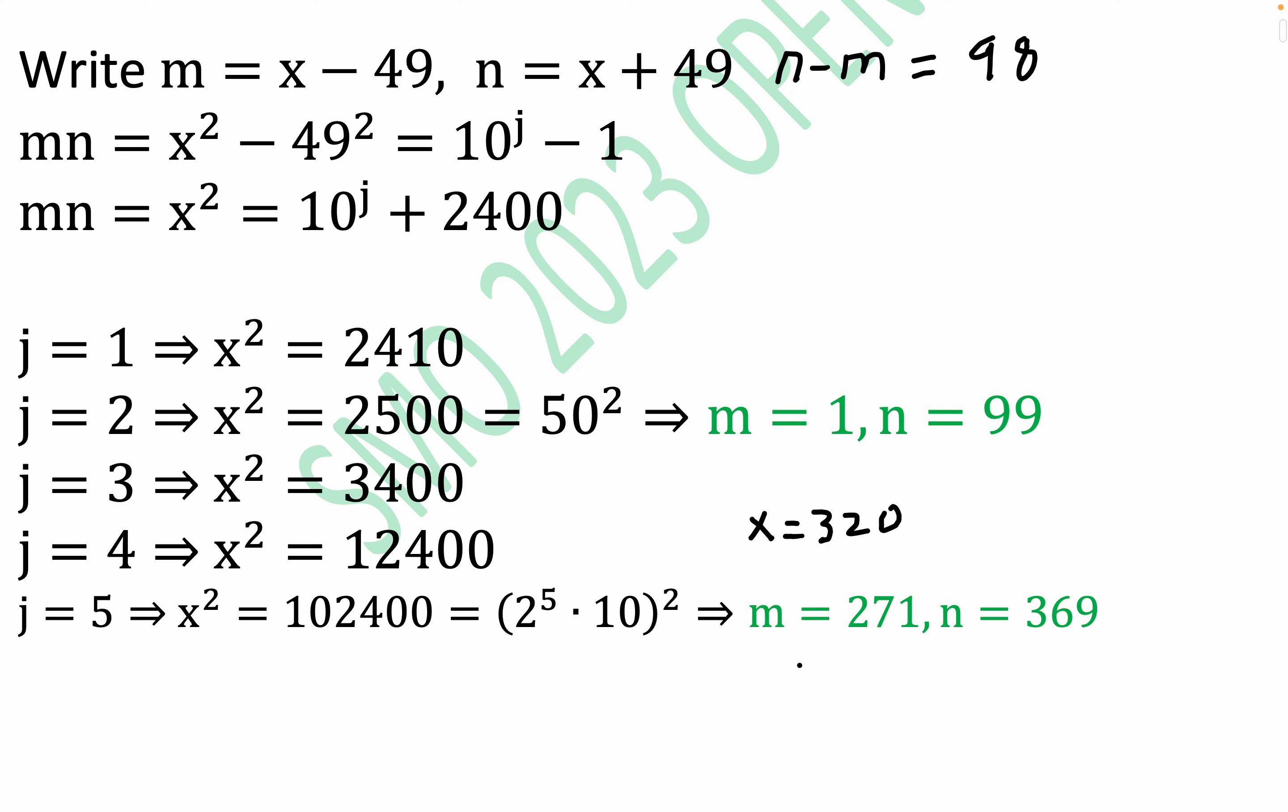So we have 320. Right here, this would be 320 minus 49. Right there, 320 minus 49 is the 271 that you see.